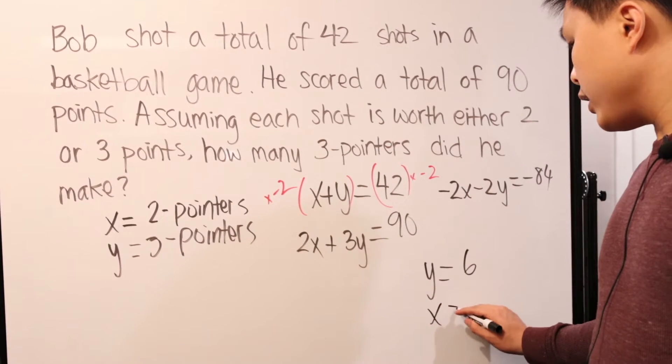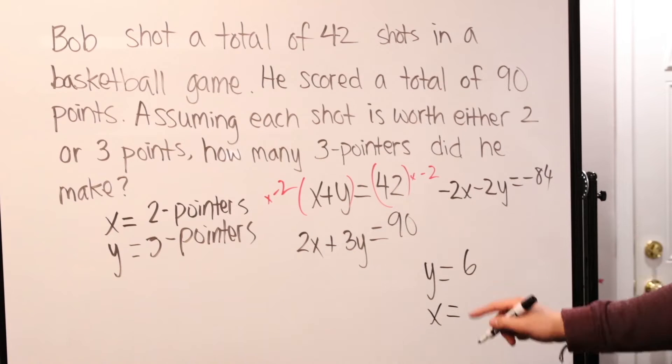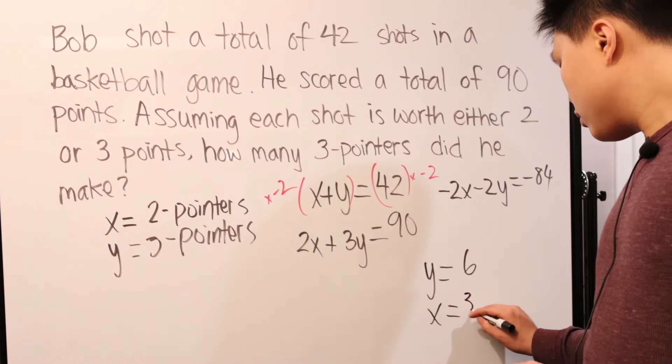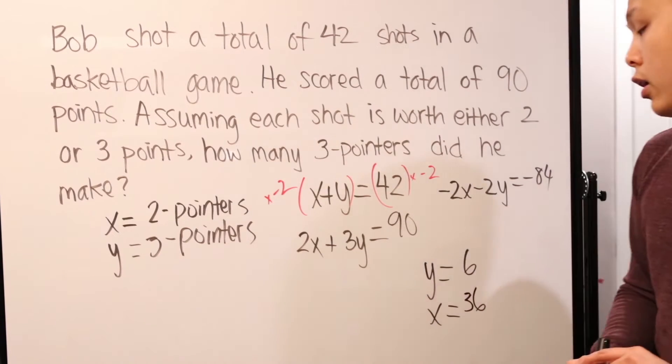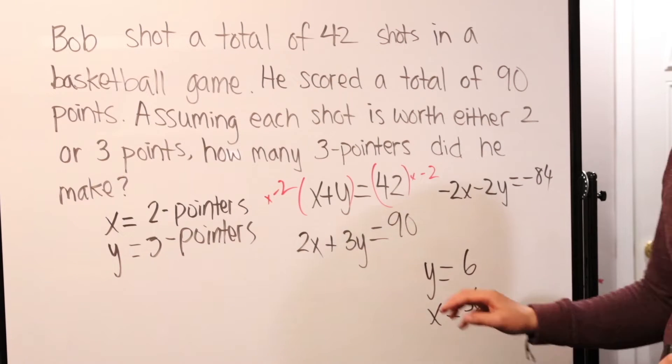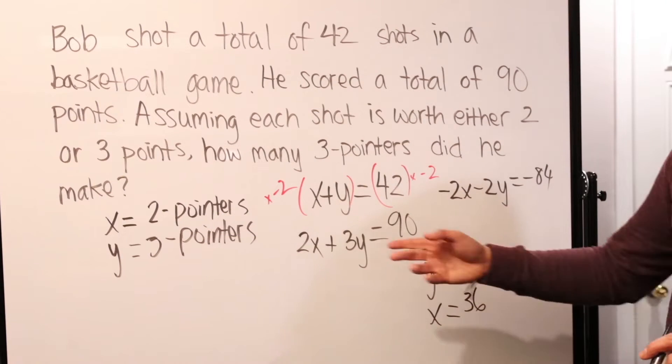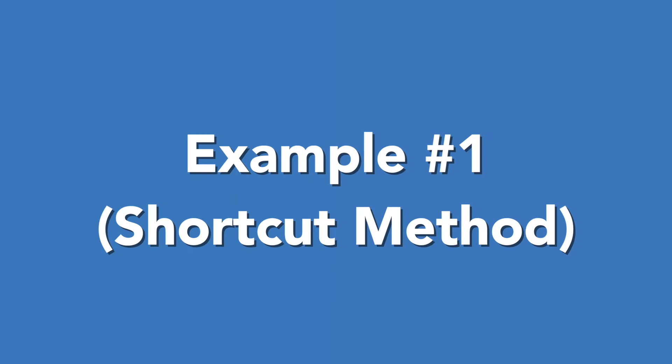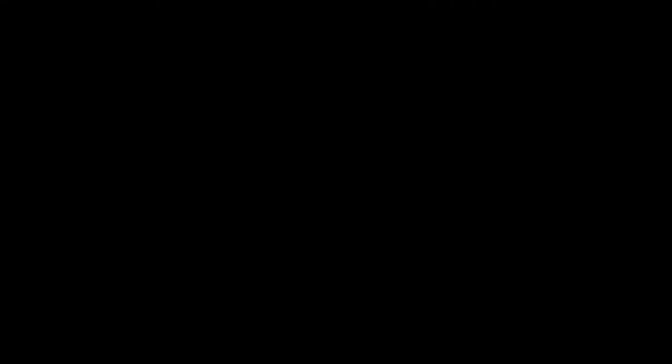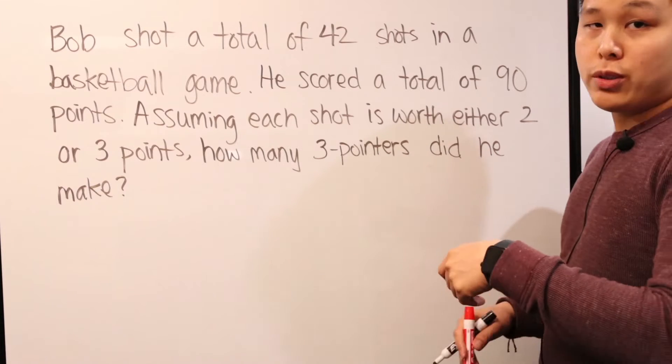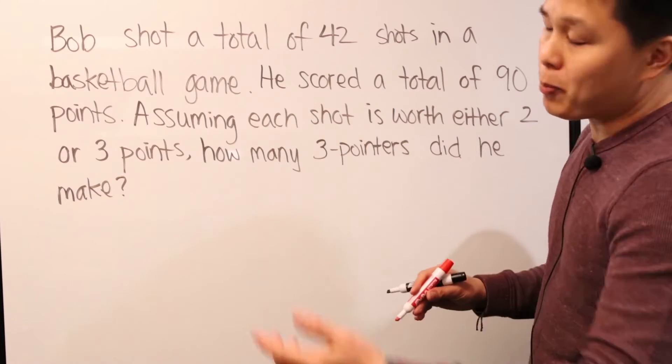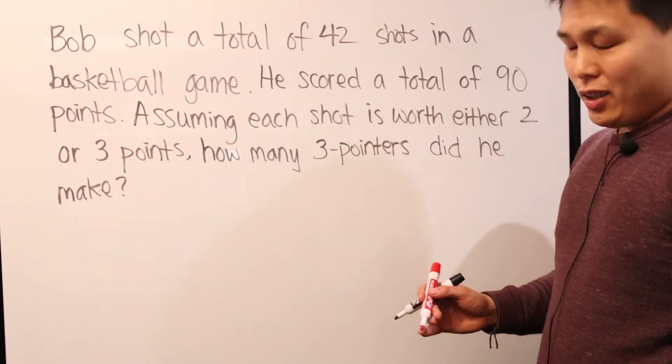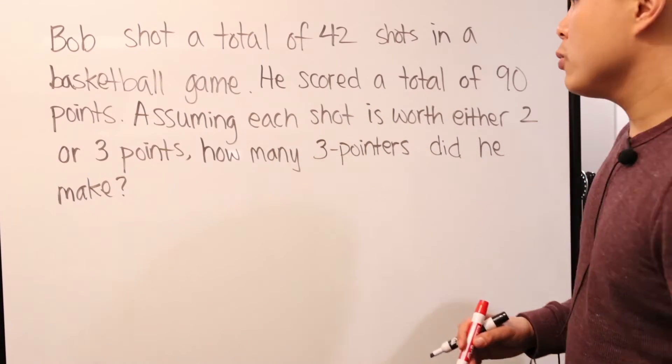And then, of course, you can also find X because what you do is you get 42 minus six, you get 36. So, he shot 36 two-pointers and six three-pointers. And then you would answer the question this way. Now, that was just going through the system of equations, solving what you would normally expect with a problem like this. Well, guess what? There is another way to just reason through it.